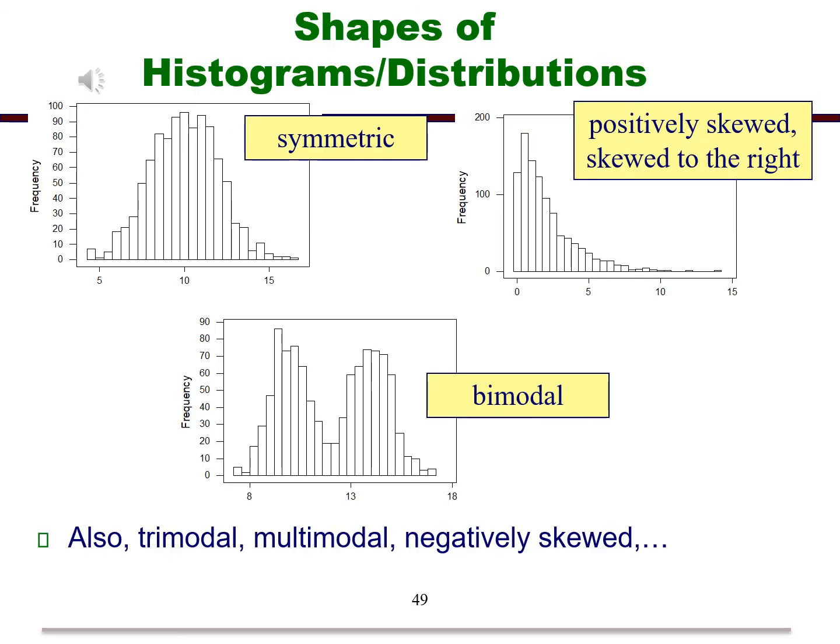Here are some examples of different patterns on histograms. The one in the upper left-hand corner gives a distribution that seems to be roughly symmetric. This means that the shape on the right of the middle is the mirror image of the shape on the left of the middle. The graph in the upper right-hand corner we consider to be positively skewed or skewed right. This means that the data trails off to the right side, or the tail of the distribution trails off to the right.